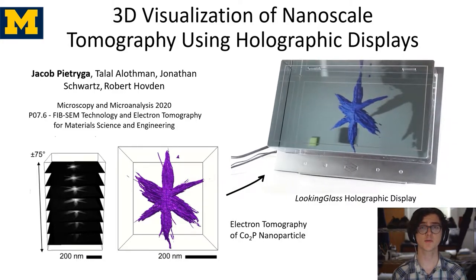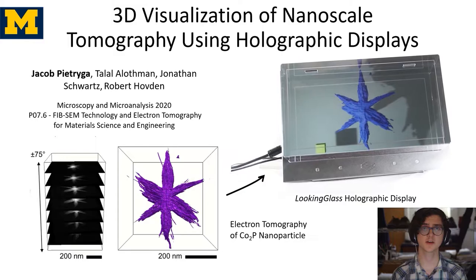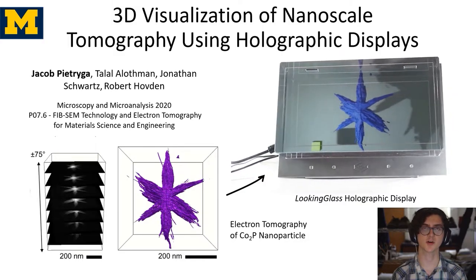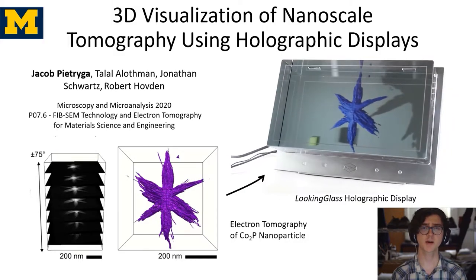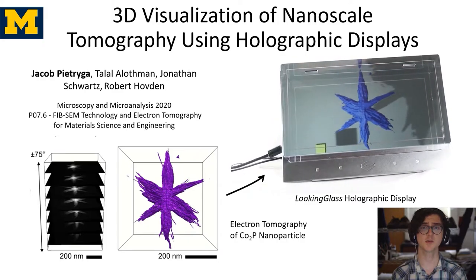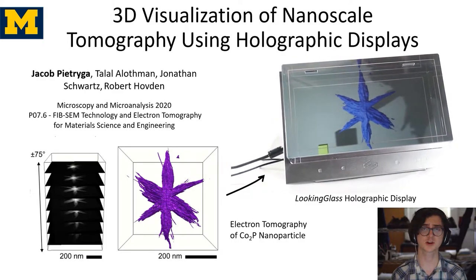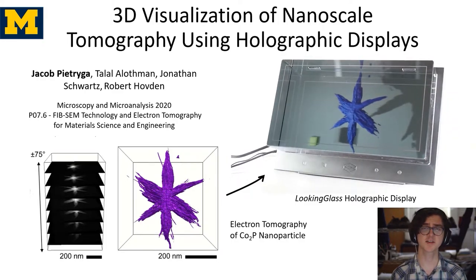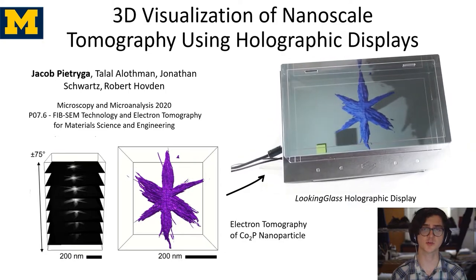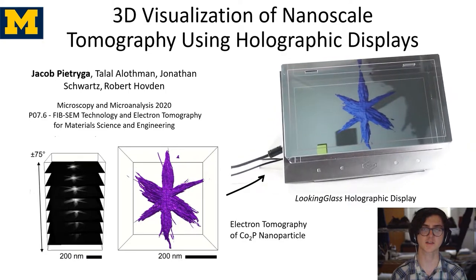Shown here is a cobalt-phosphide nanoparticle. In the bottom left, its tilt series and resulting reconstruction through electron tomography are shown. Electron tomography is a time-intensive process, taking multiple hours for data collection, reconstruction, and interpretation. As such, it would benefit from any techniques or tools that would hasten any step of the process.